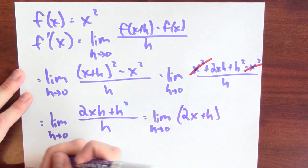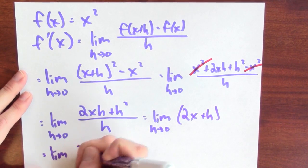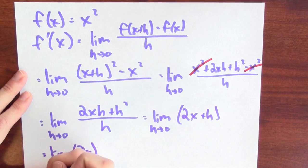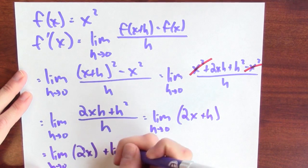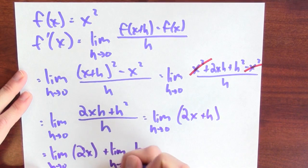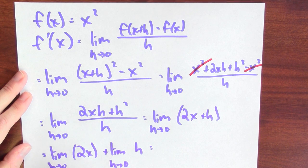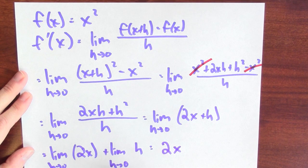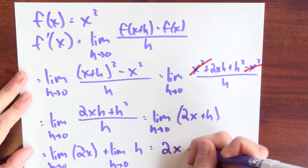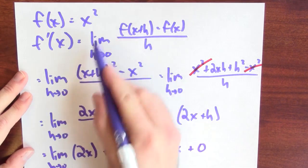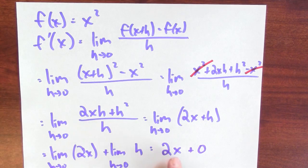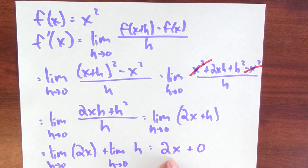What's the limit of 2x plus h as h approaches 0? That's the sum of the limits: the limit of 2x as h approaches 0, which is just 2x since 2x is constant with respect to h, plus the limit of h as h approaches 0, which is 0. So this limit equals 2x — and that's the derivative of x squared.